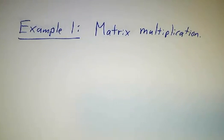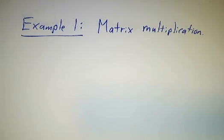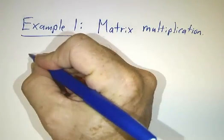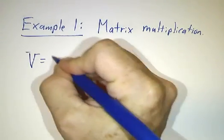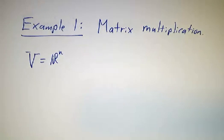Let's look at some examples. The simplest example is matrix multiplication. So in matrix multiplication, the vector space that we start with is R^n. So our linear transformation is gonna eat an n vector.